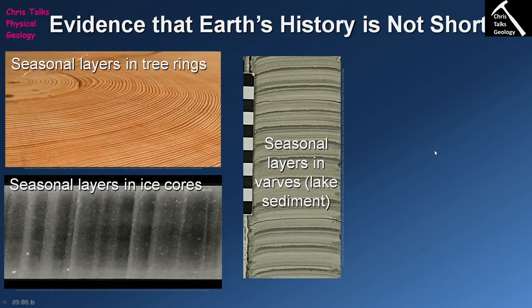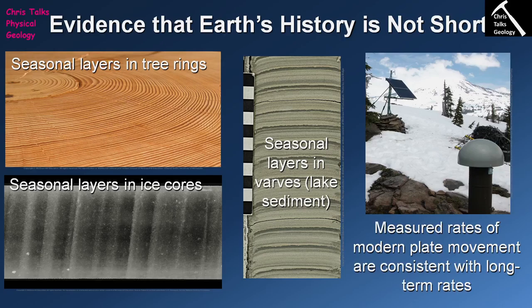We can also look at lake sediments. This particular set of lake sediments from a glacial lake has a very distinctive light-dark pattern. Each one of these light-dark couplets is referred to as a varve — the light layer represents summer and the dark layer represents fall and winter, so each couplet is essentially one year's worth of sediment accumulation. Sediment cores from lake bottoms show thousands and thousands of years of accumulation, once again in excess of what a biblical view would predict.